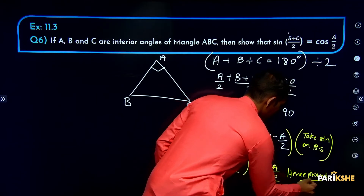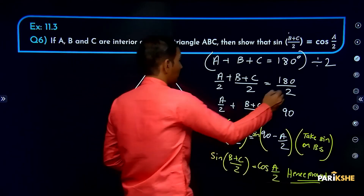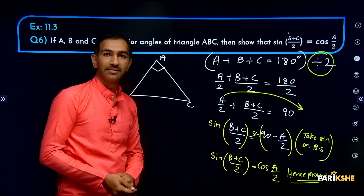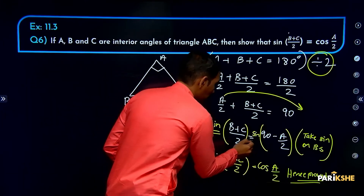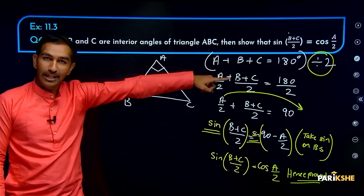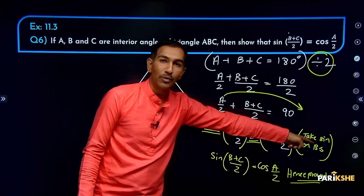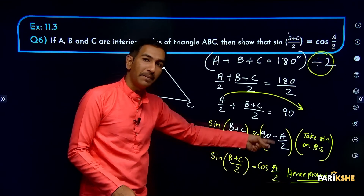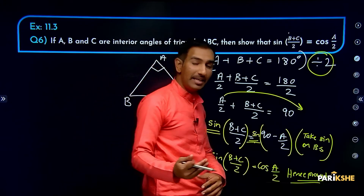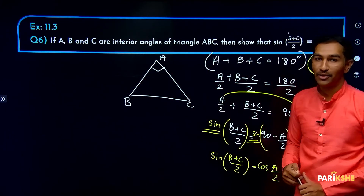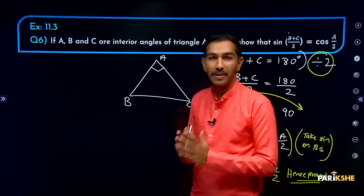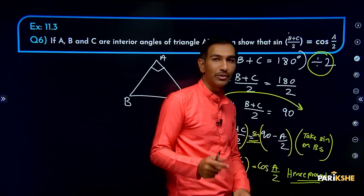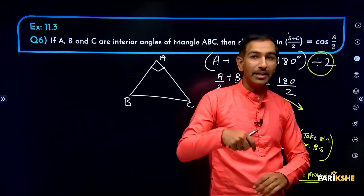The important steps in this solution: first, dividing the angle sum equation by 2; second, isolating A/2 on one side; third, taking sin on both sides. Even though cos appears on one side, that's fine because we used the complementary angle concept sin(90 - A/2) = cos(A/2). These are the key steps to remember and practice.